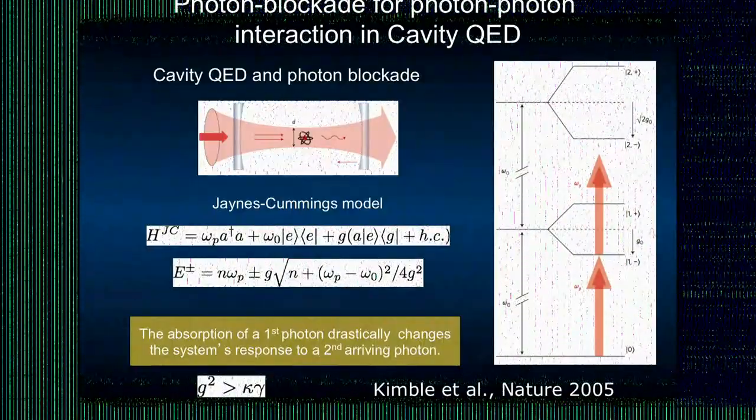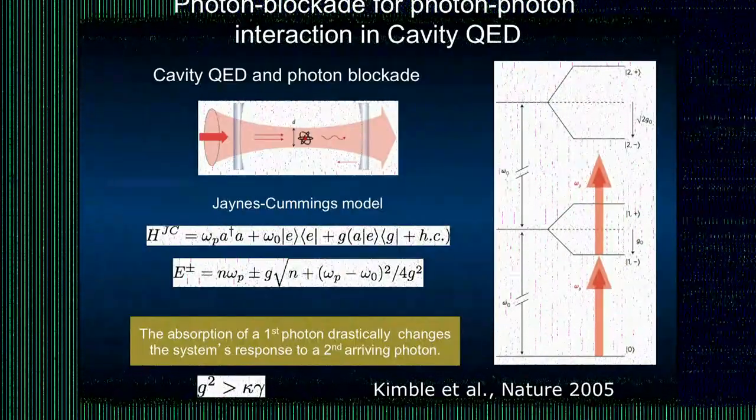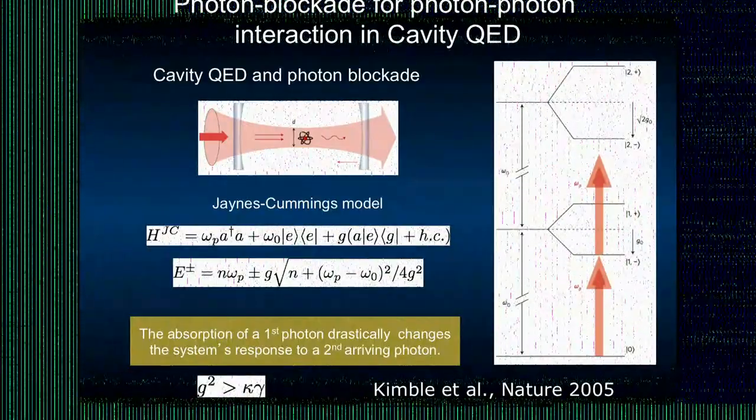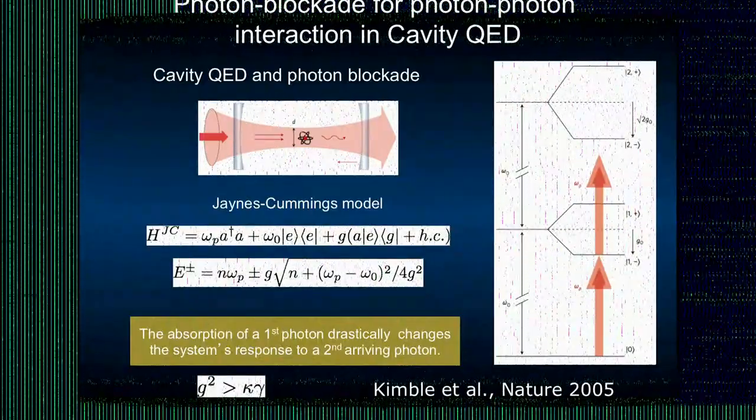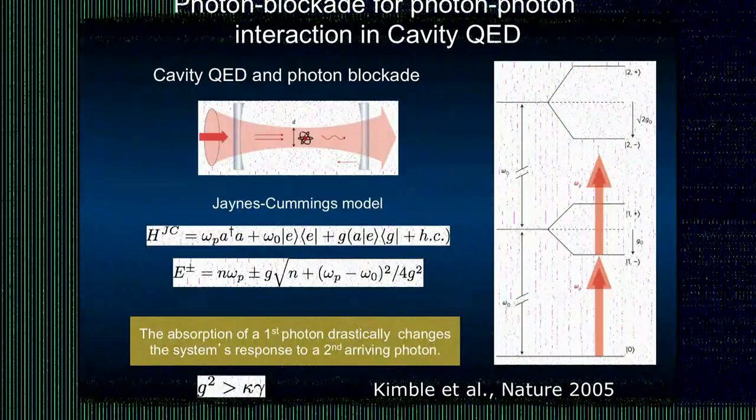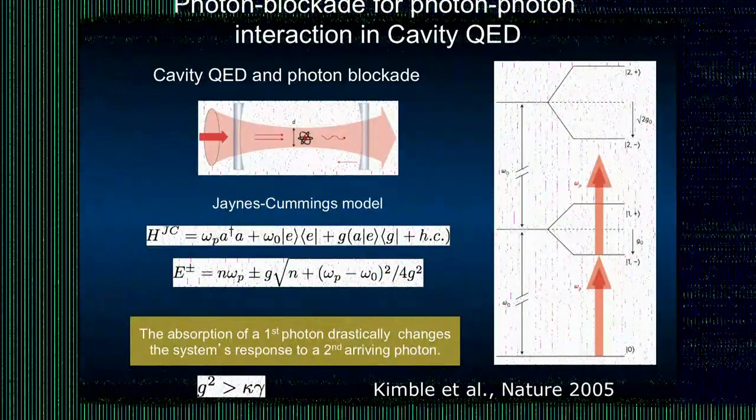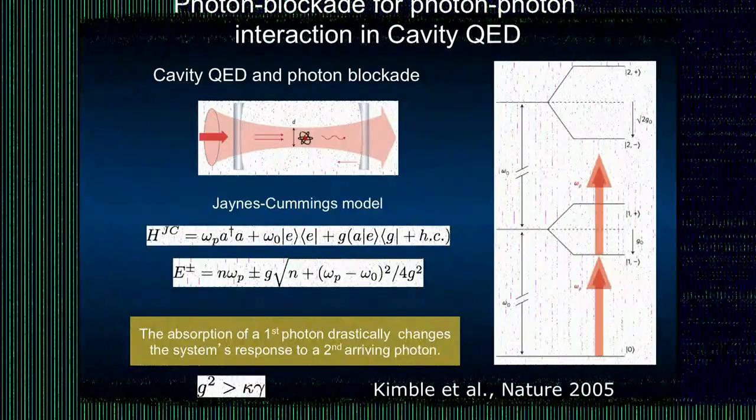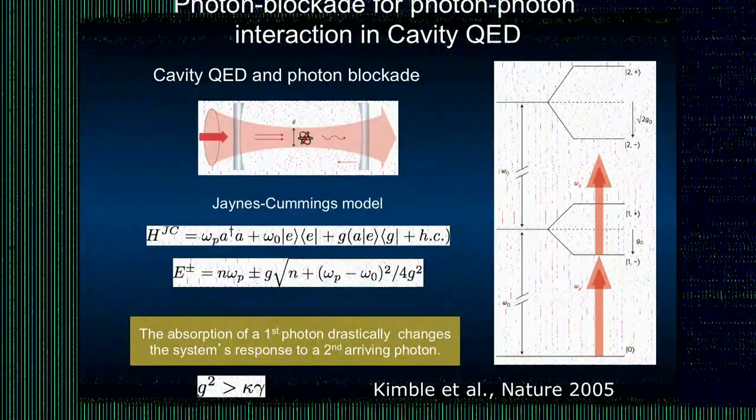I have ignored losses in this diagram. What losses do is they broaden these levels. If you are not in a strong coupling regime, you don't have this nice splitting. If you try to stick a photon in and kind of excite the system, you see that you have to be resonant with this transition from the ground state to what's called the one minus state. Now, the second photon, as it goes in, it will find a mismatch to the next available energy. That creates an effective nonlinearity, a blockade effect, like electron blockade, but now this is for photons. That's because of strong coupling. And this is the key behind these interacting photons for many body simulations and many body effects.